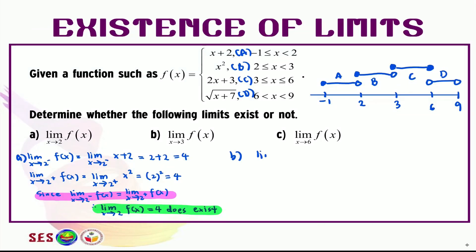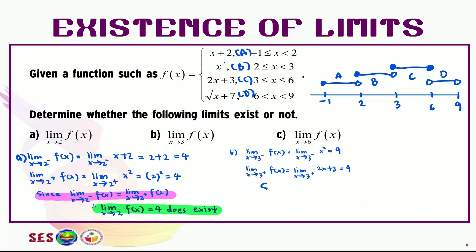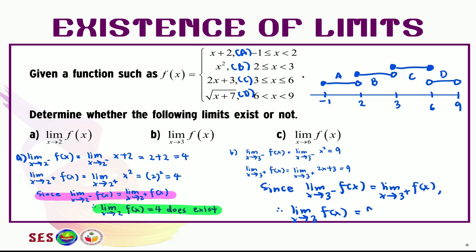Let's find the limit as x approaches 3 from the left first. Replace f(x) with function B, which is x squared. This becomes the limit as x approaches 3 from the left for x squared, and substituting gives 9. Next, for the limit from the right, replace f(x) with function C, so this becomes the limit as x approaches 3 from the right for 2x plus 3. Substituting 3 gives 9. Since the limit from the left equals the limit from the right, therefore the limit as x approaches 3 for f(x), which equals 9, does exist.